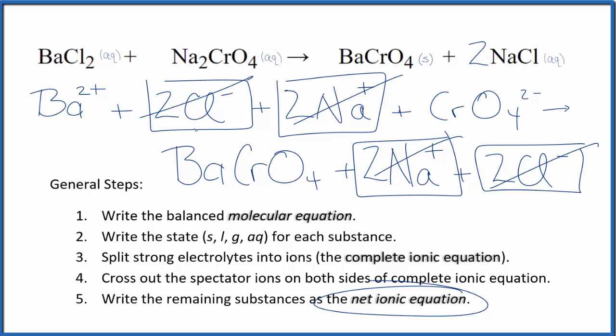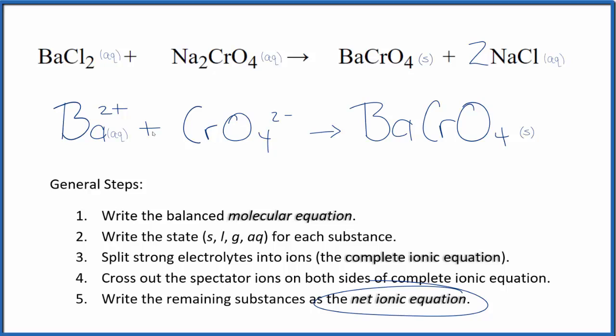I'll clean this up, write the states. We'll have our net ionic equation. So this is the balanced net ionic equation for barium chloride plus sodium chromate. You'll note that the atoms, they're the same on both sides. They're balanced and the charge is balanced as well. Two plus, two minus, net charge of zero. This is neutral, net charge of zero.